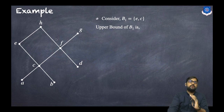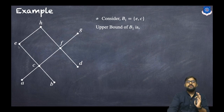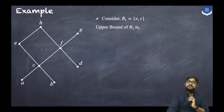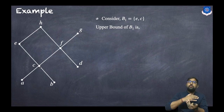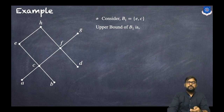Now we decide whether H, F, and G are upper bounds. Consider H — there has to be a relation from each element of the set to H. Can we go from E to H? Yes. Can we go from C to H? Yes — first go from C to E, then E to H. So H is an upper bound.